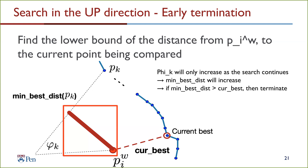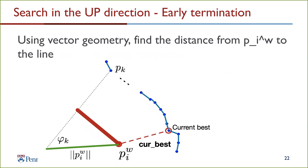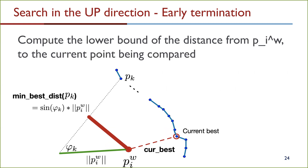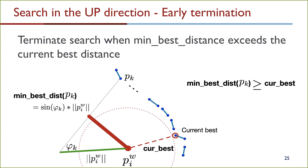phi_k will only increase as the search continues, which means the min-best distance will also increase. So if the min-best distance is greater than the current best distance — the current minimum distance to the scan point — there is no reason to continue the search and we can terminate. To compute this distance, we use vector geometry: we compute the norm of p_i^w, and from basic trigonometry the min-best distance is sin(phi_k) × ||p_i^w||. When this min-best distance exceeds the current best distance, the search in the up direction can be terminated.